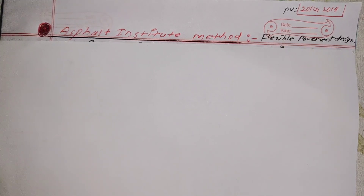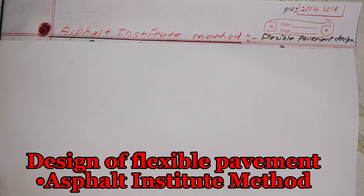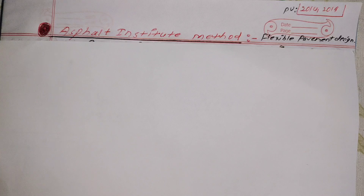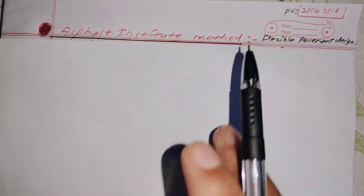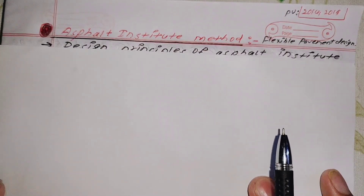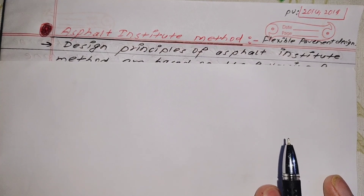Hello everyone, welcome to my next video. As I say, we will go through the Asphalt Institute method procedure. This is a cool design mass - an important numerical on flexible pavement design. I will go through the solution of important numerical questions later so that even if a new type of question comes, you can find the solution. First of all, I will go into the important numerical solution.